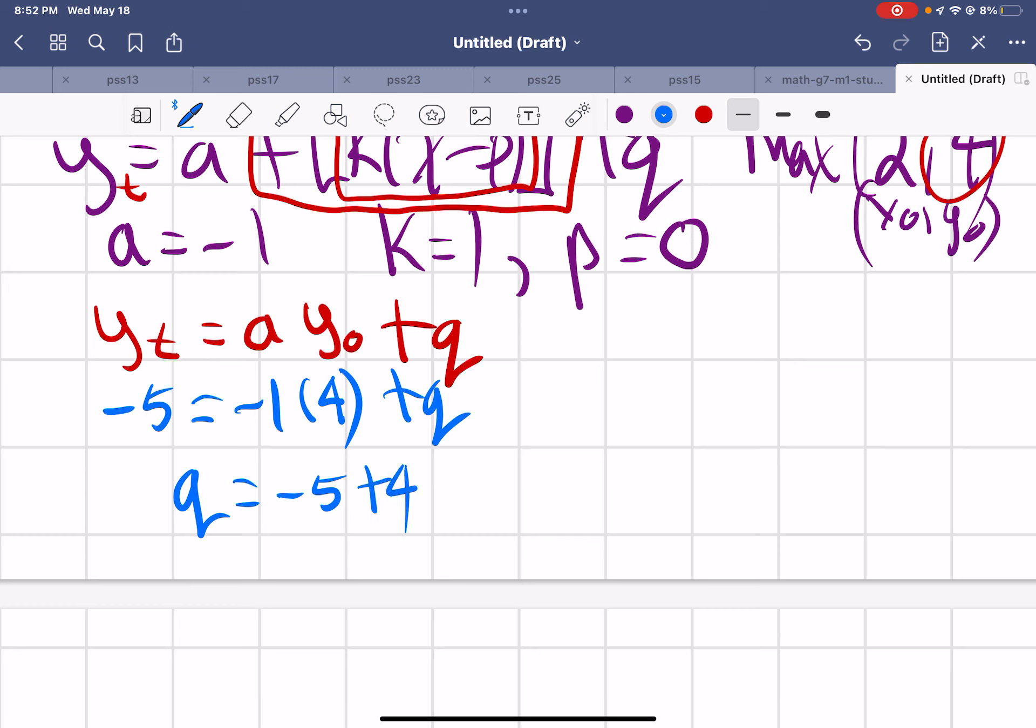So how did I get that? That works out to negative 4 when I multiply. And so then I'm going to have to add 4 to both sides. Negative 5 plus 4.